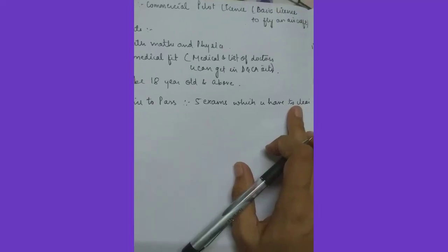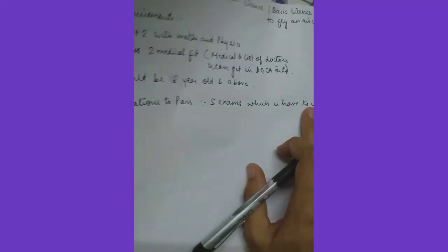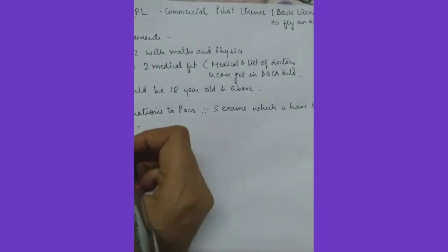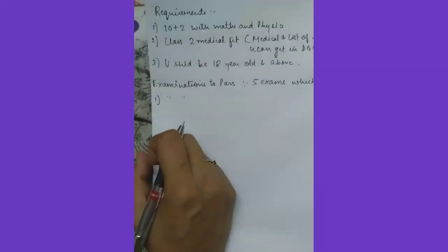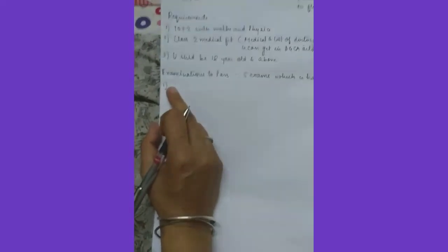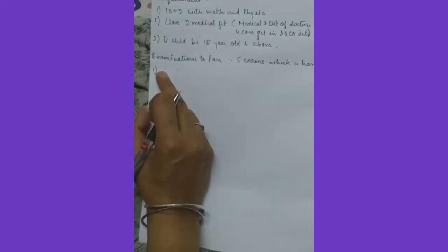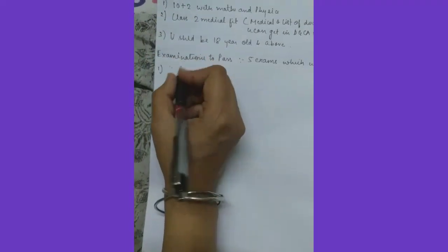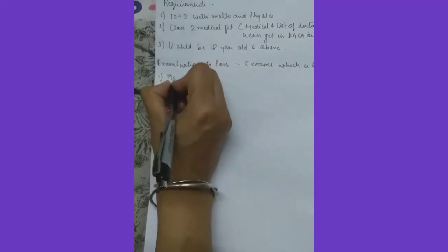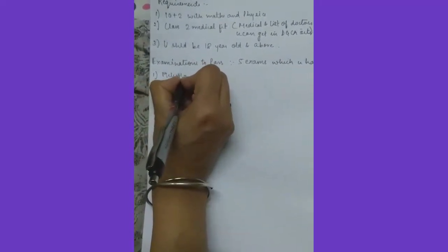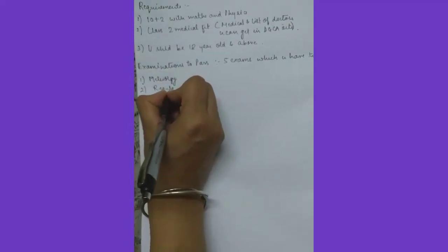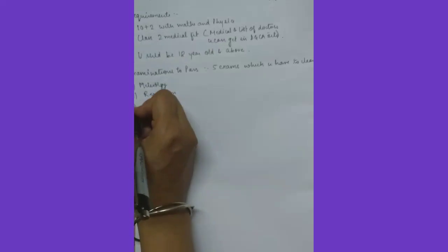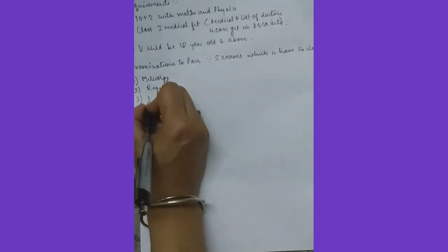Five examinations before you start your flying. The first examination, if you're doing flying from India, I'll be clear. If you're doing your flying from India, then you have to clear five examinations. The first examination is meteorology, the second examination is regulations, the third examination is navigation.